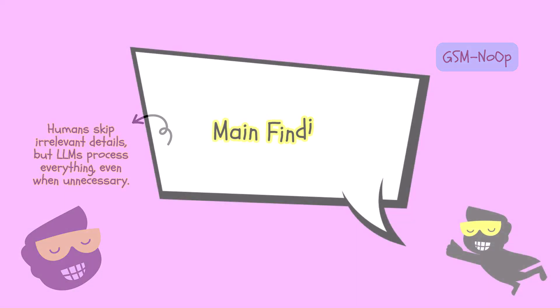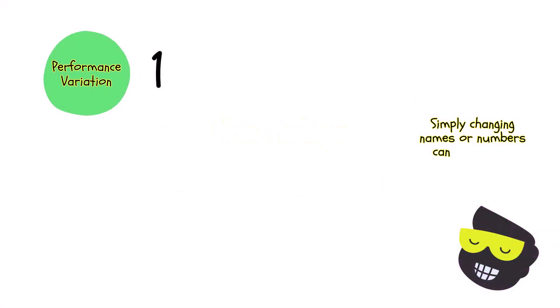When it comes to the main findings, the first one is actually performance variation. When you change the names in a math problem, think Sophie instead of Tina, some LLMs fluctuate in accuracy more than you'd expect. Changing the numerical values has an even bigger impact. Models that ace the original dataset sometimes drop by a noticeable margin.